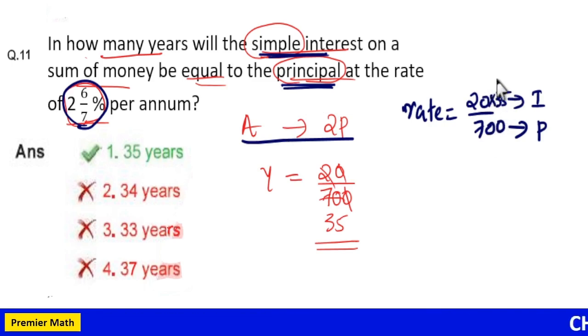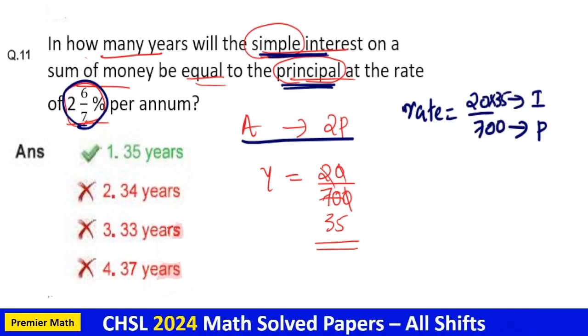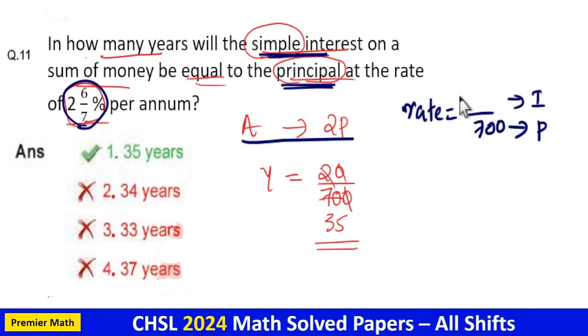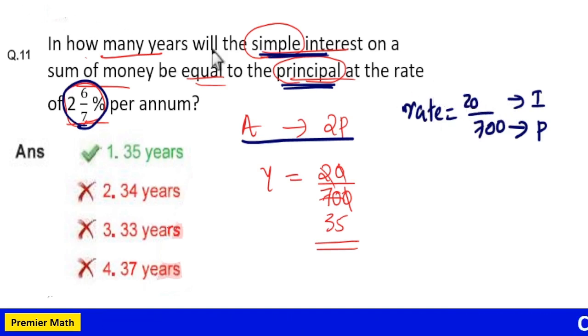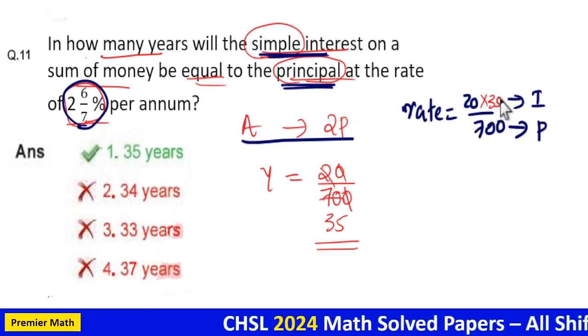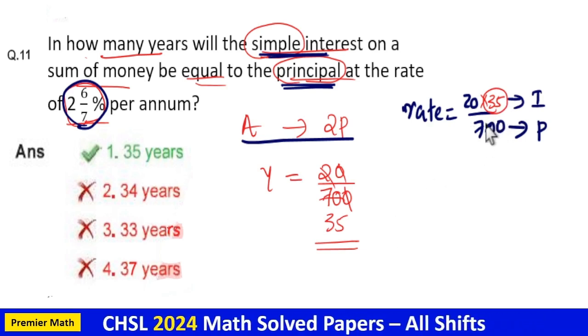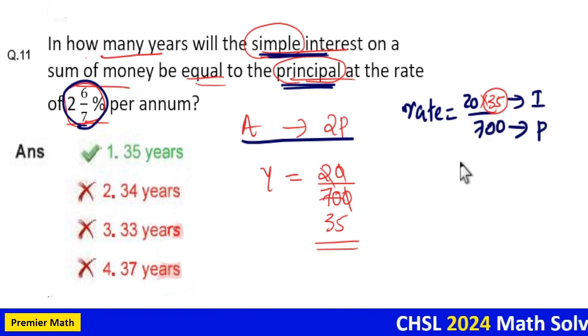Now you can see here equal numerator equal and denominator equal. That is here when you multiply 20 with 35, numerator equal to denominator which means 35 years. So in this way, you can also calculate just by using the rate.